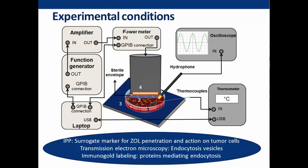This is the experimental setup. The probe was covered by a sterile envelope and placed directly in contact with the cells and drug in petri dishes. The probe was connected to a power amplifier and a function generator driven by a computer. Cavitation activity was measured using a hydrophone, and several thermocouples were used to measure temperature inside the medium.